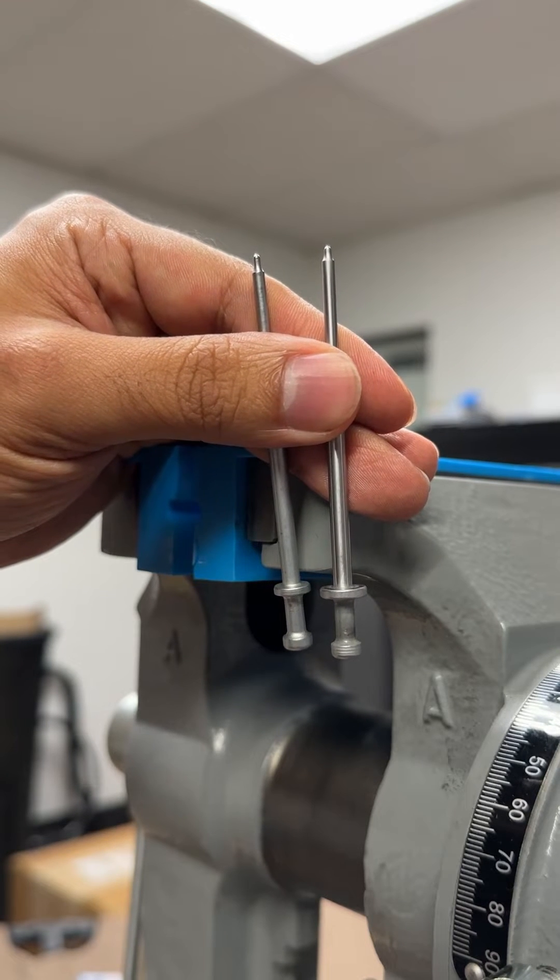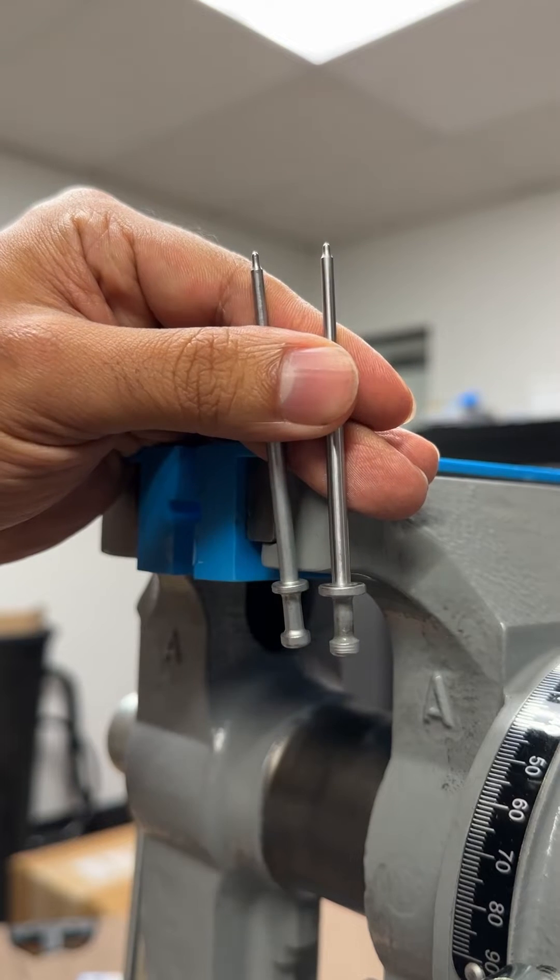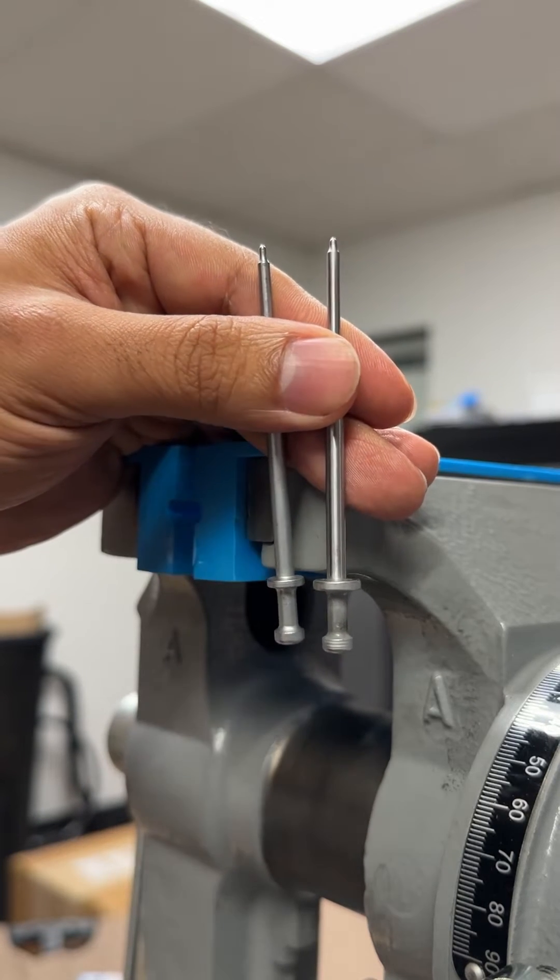What we're looking for is the protrusion of the firing pin out the face of the bolt. So we're going to demonstrate that here.